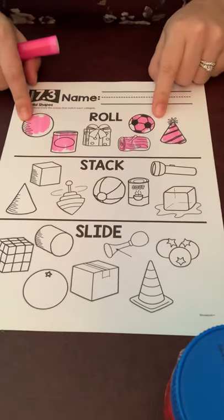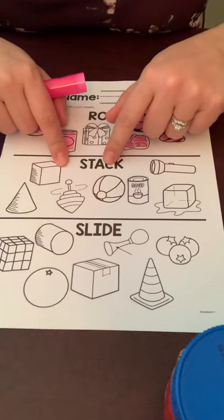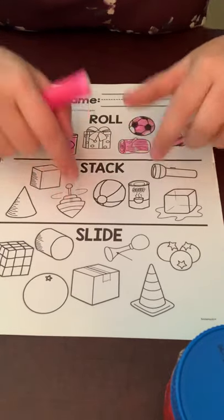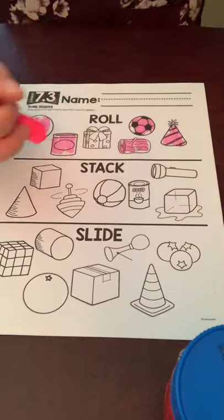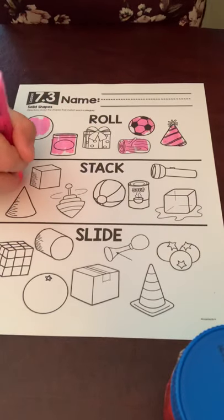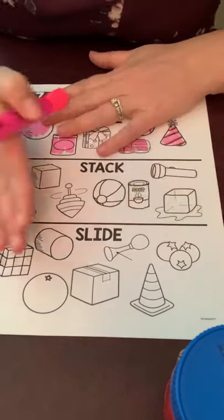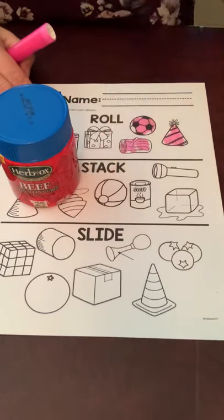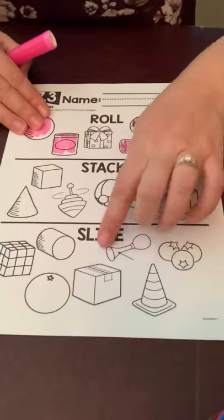So your job is to color all the ones that roll. If you think you can stack it, you can color it here. Can you stack these shapes on top of each other? Think yes, color it in. This last one is if you can slide it. If you can push it and give it a slide, then you can call it a slide.